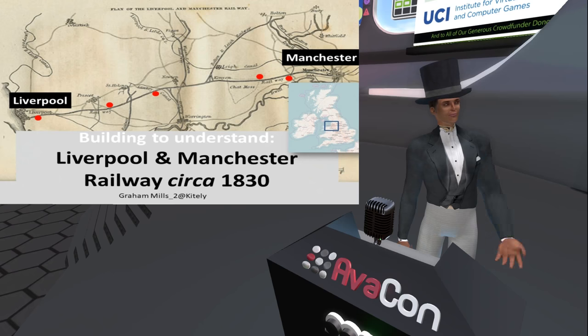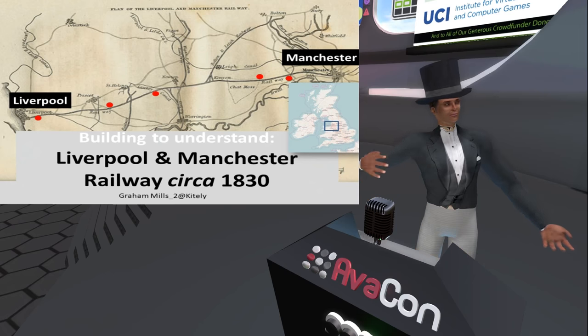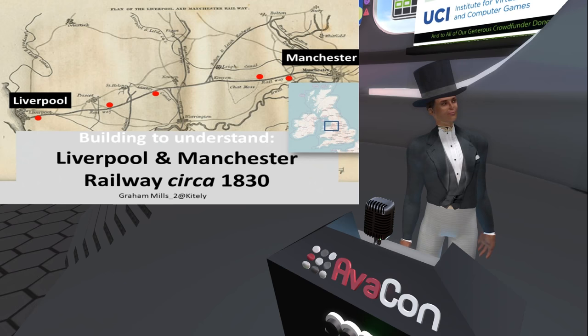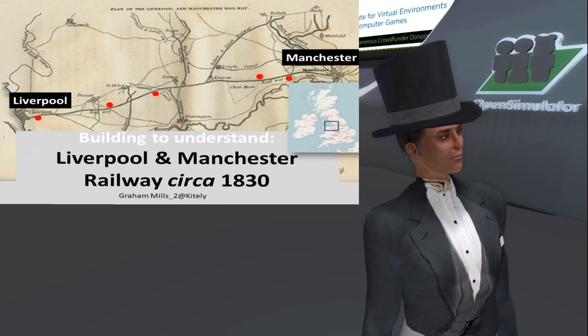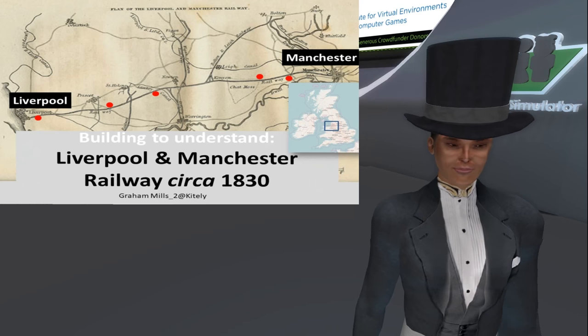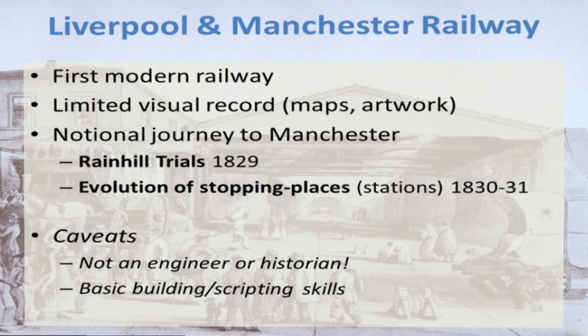What I'm trying to do is develop a sort of topographical model of the railway. I talked last time about one station, which we'll look at in a moment, but I'm basically extending this out along the line to Manchester. The reason for this interest is also because a lot of people regard the Liverpool and Manchester Railway as the first modern railway — the first time that all the elements of modern rail travel were brought together in one place.